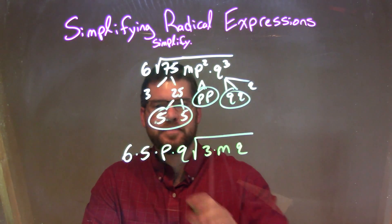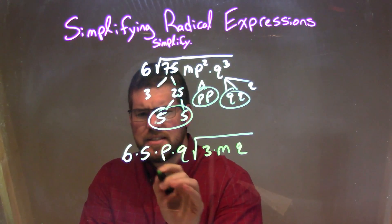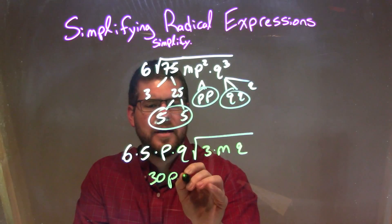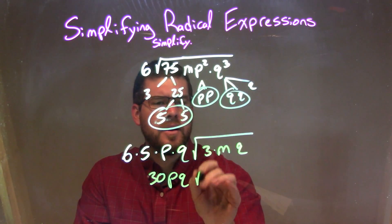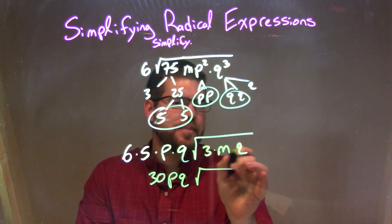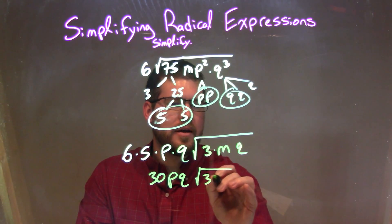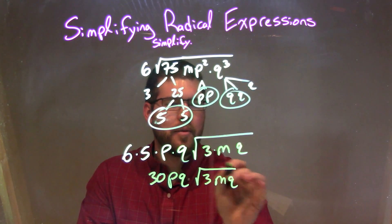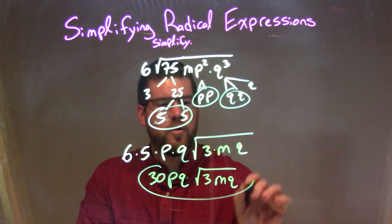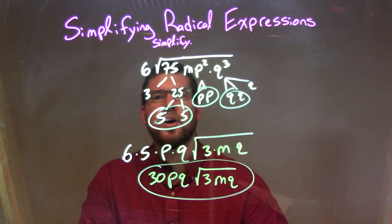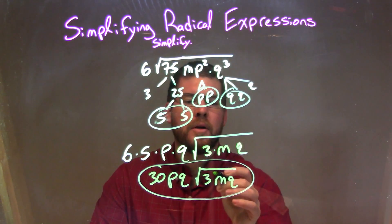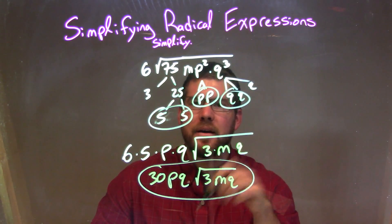So now let's simplify. 6 times 5 is 30, so you have 30p times q times the square root of 3mq, and there we have it — our final answer, which is just 30pq times the square root of 3mq.